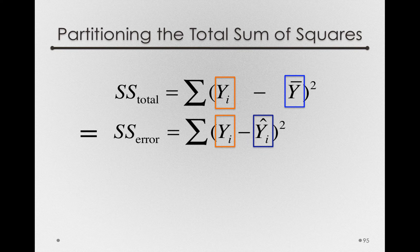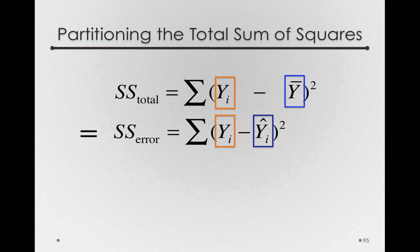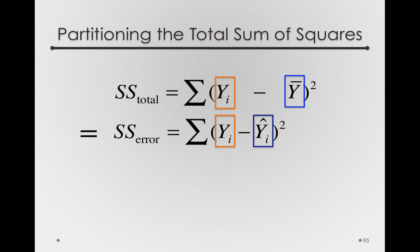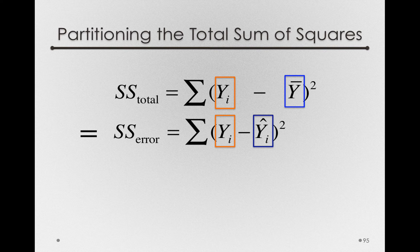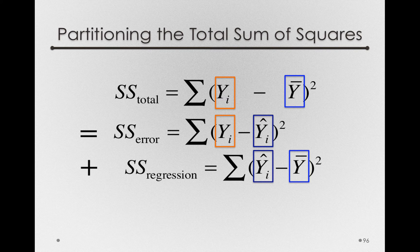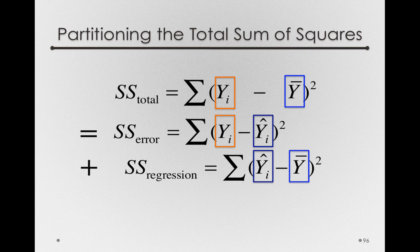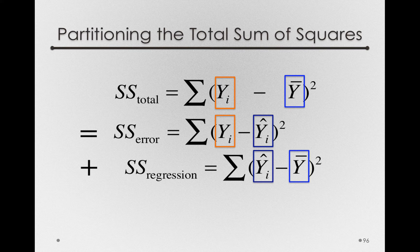The first part we've seen before, sums of squares for error. So, the deviation between an individual's actual score and what is predicted by the model for them. And what we'll do is, across all individuals, take the sum of those squared deviations. Now you'll notice, we're missing a piece in this model. The deviations between what is predicted for an individual and the grand mean. And those, in a regression model, are called the sums of squares regression. And the sums of squares regression, just like the sums of squares for treatment, are capturing the effect of our x variable.